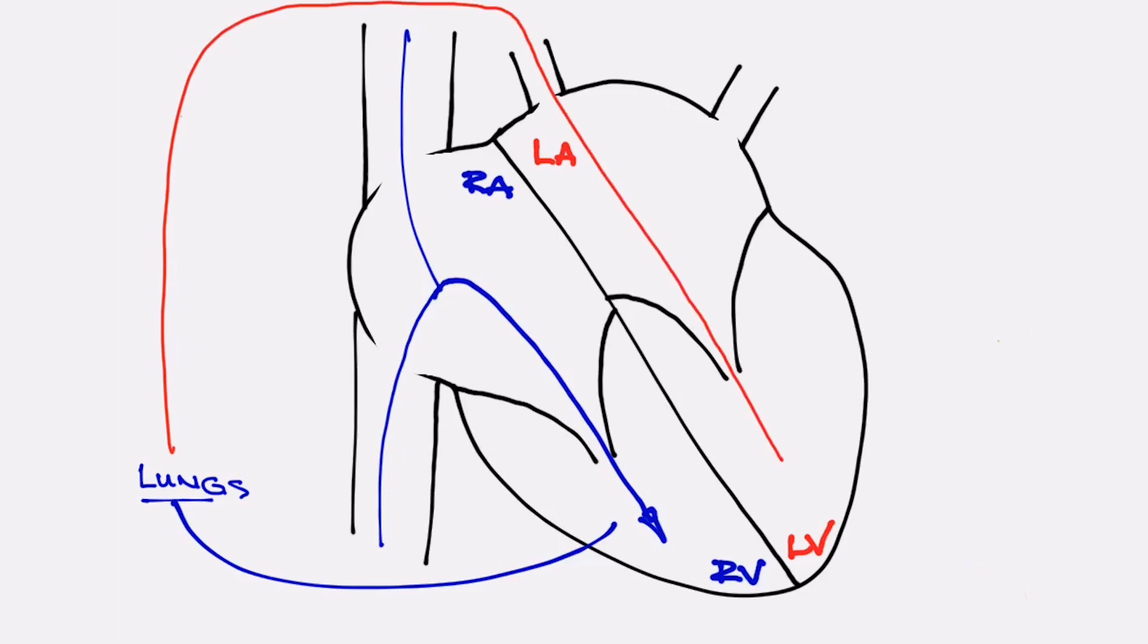In the lungs, the blue blood is oxygenated and then the oxygenated, or red blood, returns to the left side of the heart and in the same manner enters the top chamber on the left called the left atrium, goes through a valve into the bottom chamber called the left ventricle, and as that chamber fills, it gets the message to pump and blood is then pumped to the body.